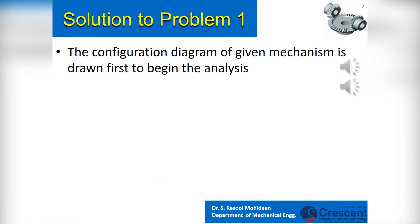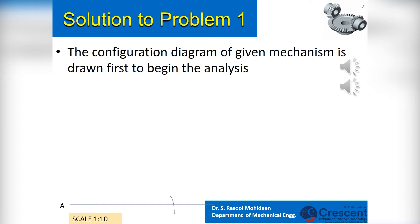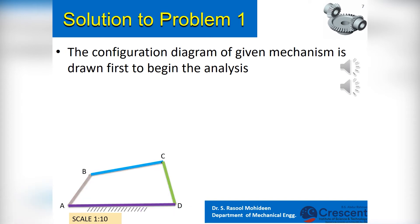To solve the problem, first we need to draw the given mechanism to a particular scale. Since we know how to draw a 4-bar mechanism if the dimensions are given, the procedure is just shown. A scale of 1:10 is adopted to draw the configuration diagram of the given mechanism. This can be considered as step 0.